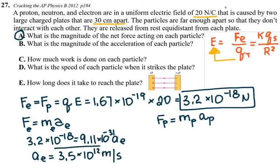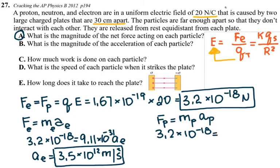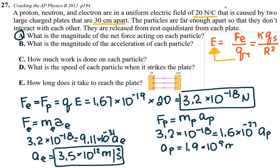Even though the acceleration value is very large, it doesn't mean the electron will reach the speed of light — it won't be accelerating for a full second. For the proton: the same force, 3.2 times 10 to the negative 18, divided by the proton mass of 1.67 times 10 to the negative 27, gives an acceleration of 1.9 times 10 to the 9 meters per second squared.